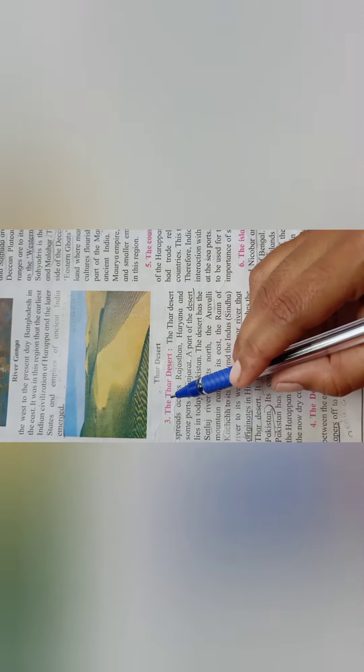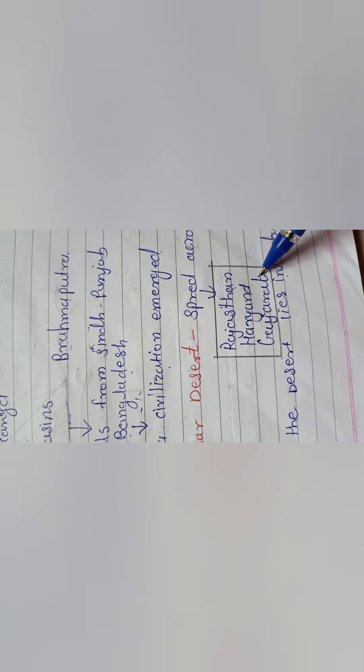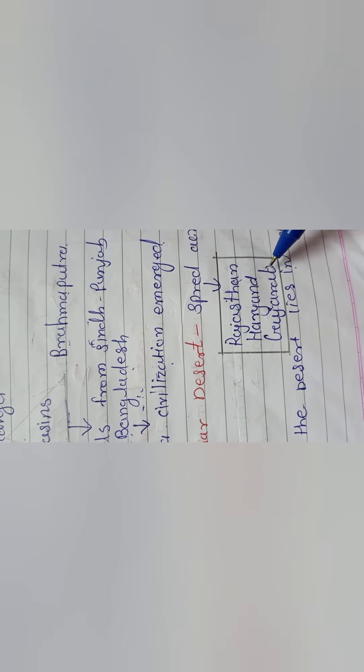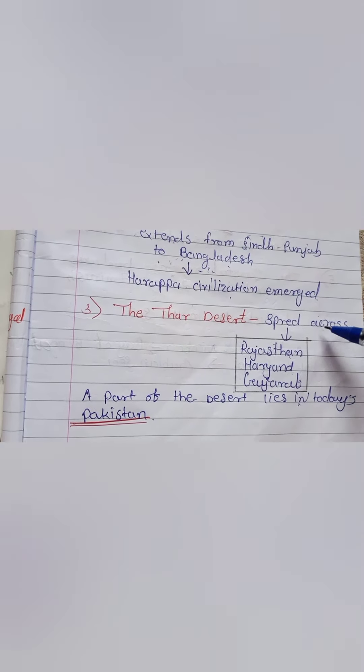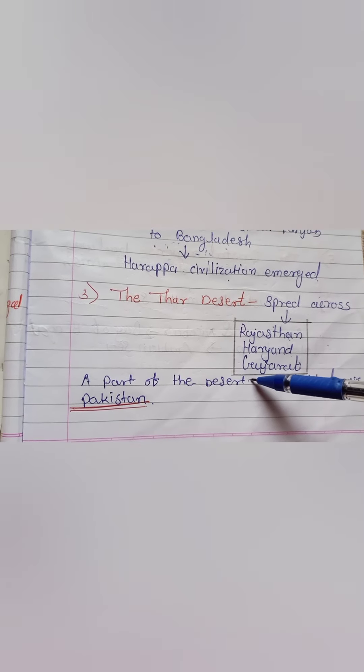Now move to the next point: the Thar Desert. You can see the picture here. The Thar Desert is spread across Rajasthan, Haryana, and some part of Gujarat. Some part of the desert also lies in today's Pakistan. To the north of the Thar Desert is the Sutlej River, and to the east is the Aravalli mountain range.